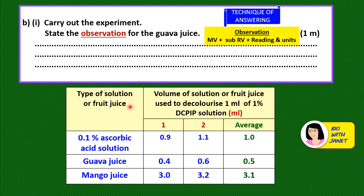Here is a table of results. Let's say you obtain this table after doing the experiment. The type of solution or fruit juice column is your MV. The volume of solution or fruit juice used to decolorize 1 ml of 1% DCPIP solution in ml is your sub-RV. There are two readings and an average. For the observation, you should state both raw readings — reading 1 and reading 2 — and not the average, since the average is obtained after calculation and is not raw data.